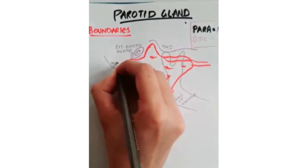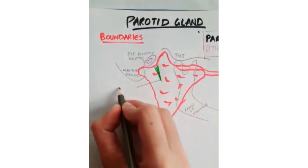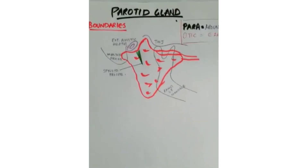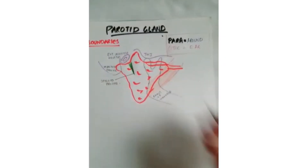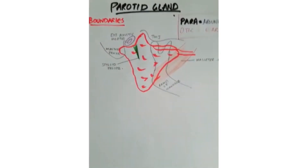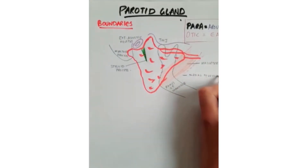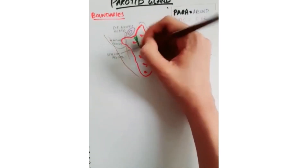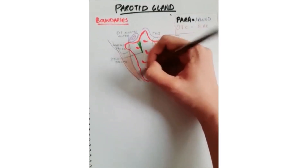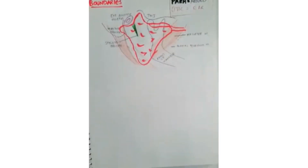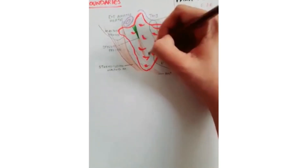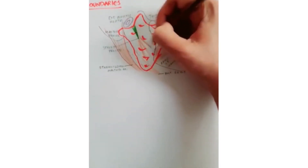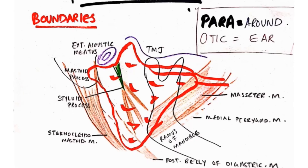Medially you have your styloid process. The parotid bed is lined by muscles. On the ramus of mandible there are two muscles: laterally you have masseter muscle and medially you have medial pterygoid muscle. On the mastoid process there are also two muscles: laterally sternocleidomastoid and medially the posterior belly of digastric muscle. The styloid process is covered with three slender muscles: stylohyoid, styloglossus, and stylopharyngeus.